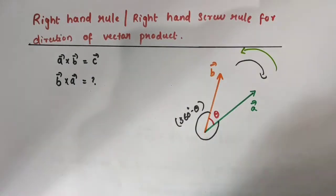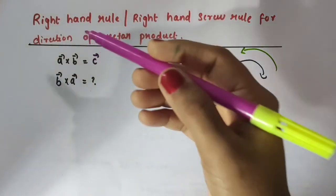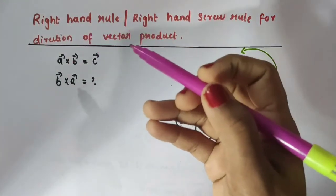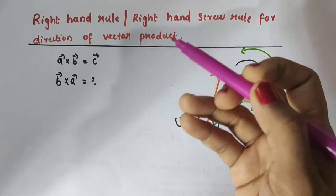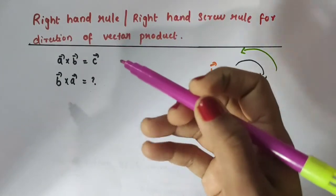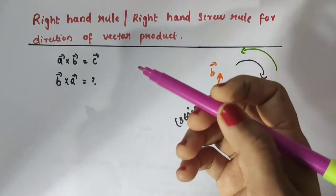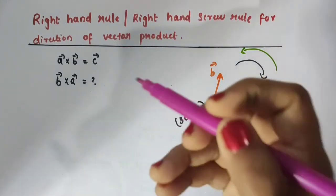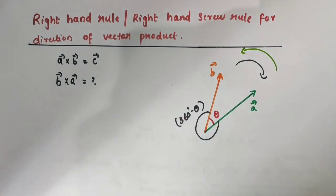In this video we have discussed the right hand rule as well as the right hand screw rule for the direction of vector product or cross product. I hope you understood this. Thank you.